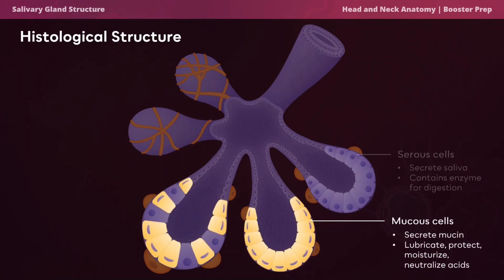Mucus cells play a crucial role in the production of mucin, the key component of mucus. The primary functions of mucus cells include lubrication, protection, moisturizing, and buffering. Lubrication facilitates smooth movement; mucus acts as a protective barrier lining the mouth and throat against pathogens, chemicals, or abrasive particles; and mucus helps prevent dryness and keep tissues hydrated.